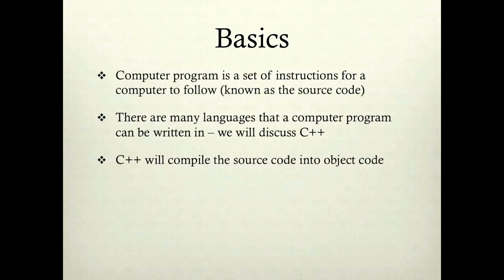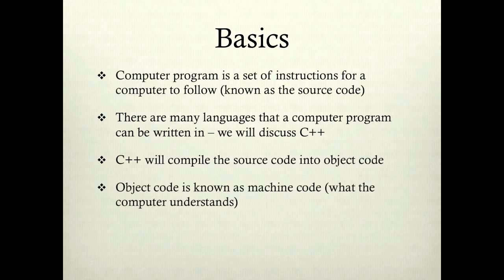C++ will compile the source code that you type with your keyboard into object code. This object code is known as machine code, which is what the computer understands but the human eye cannot — basically it converts it to a whole bunch of zeros and ones that we don't understand.